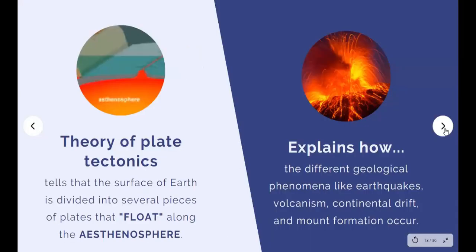The theory of plate tectonics tells us that the surface of the Earth is divided into several plates that float along the asthenosphere. It explains how different geological phenomena like earthquakes, volcanism, continental drift, and mountain formations occur.